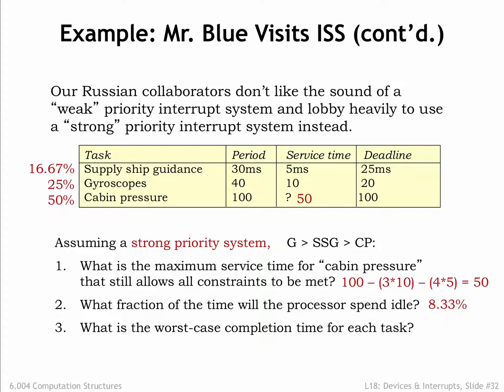What is the worst-case completion time for each task? The G task has the highest priority, so its service routine runs immediately after the request is received, and its worst-case completion time is exactly its service time. In the 25ms interval between an SSG request and its deadline, there might be at most 1 G request that will preempt execution. So the worst-case completion time is 1 G service time (10ms) plus the SSG service time (5ms). Finally, the service time for CP was chosen so that it completes just at its deadline of 100ms, taking into account the service time for multiple higher-priority requests.